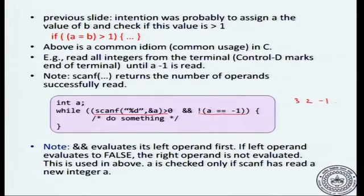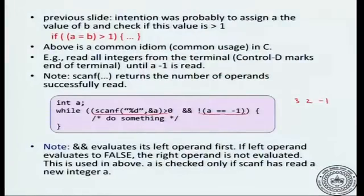It will not even evaluate the second operand. On the other hand, if the first operand is true then it will check whether the second operand is true. If the second operand is also true then the whole expression is true; if false then the whole expression is false. This method of evaluation is also called short-circuiting because it may not evaluate the whole expression in order to get the result.